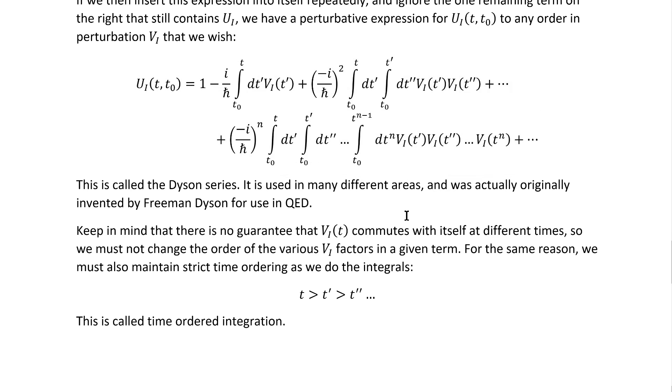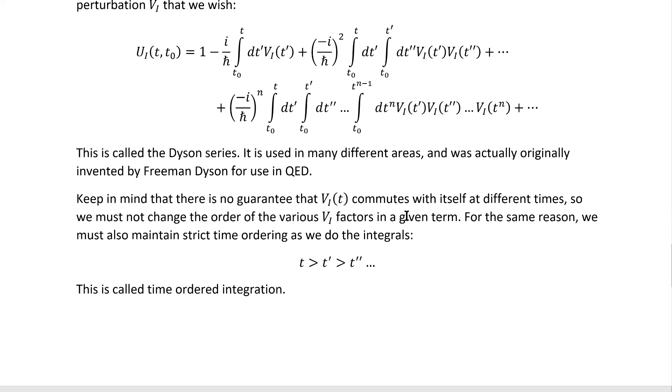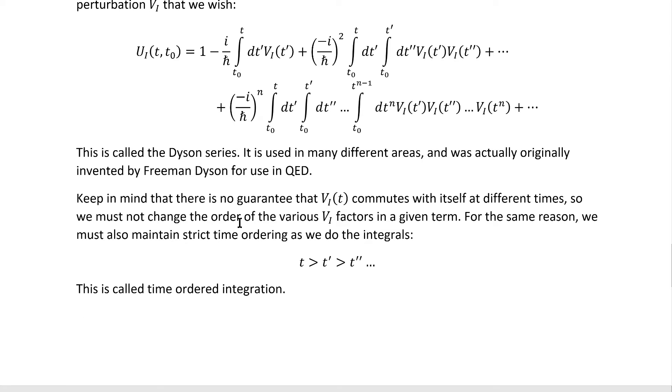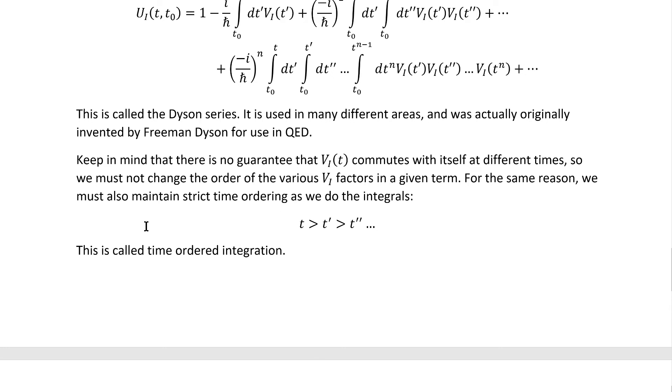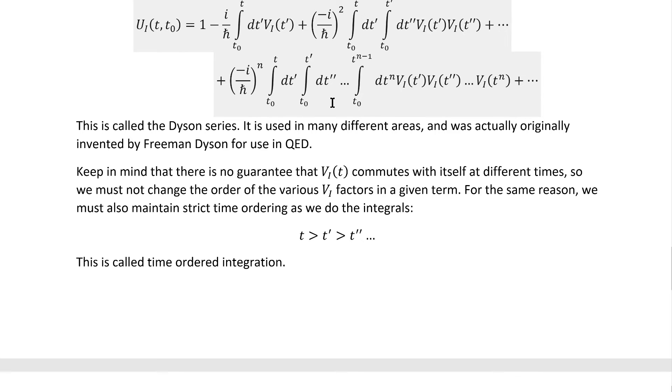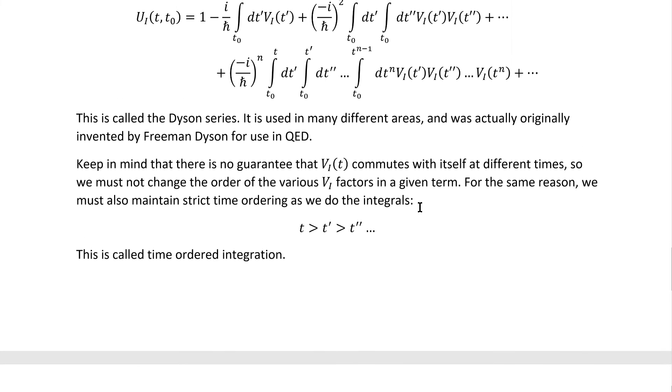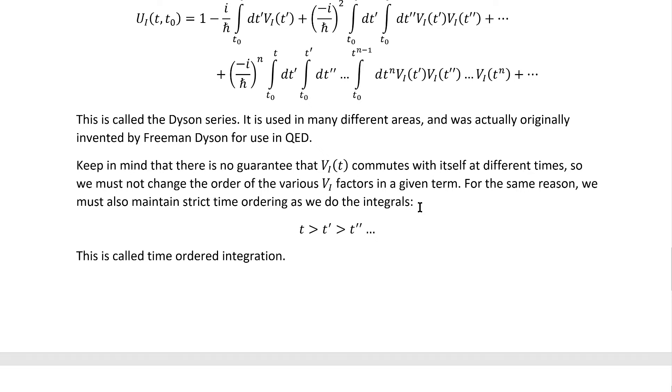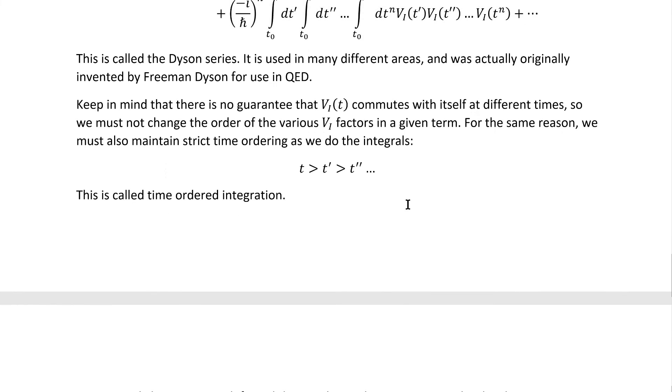This is called the Dyson series, and it's used in many different areas and was actually originally invented by Freeman Dyson for use in QED. Keep in mind that there is no guarantee that VI commutes with itself at different times, so we must not change the order of the VI factors in any of these integral terms. And for the same reason, we must also maintain strict time ordering as we do the integrals. This is usually just called time-ordered integration, and it turns out that we can actually rearrange this such that it ends up being a sort of exponential-looking thing, except with time-ordered integration, and that's often called a time-ordered exponential. I didn't go through the process here because I didn't really see a lot of value in it. But note that that exists.